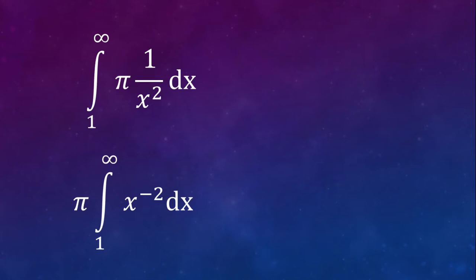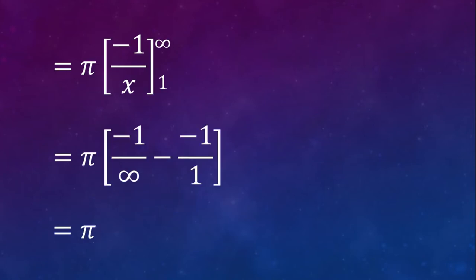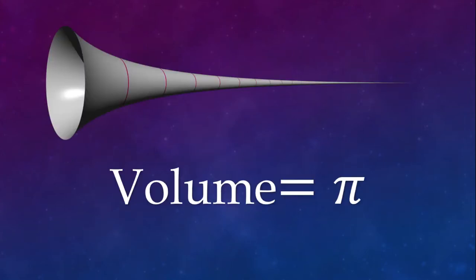So let's simplify this integral. π is a constant, so we can move that out of our integral. And 1 over x squared is the same as x to the negative 2. And now we can apply the integral power rule to figure out this. And when we simplify this, we get that it's equal to π. So how cool is that - the volume of this weird looking thing turns out to be π.